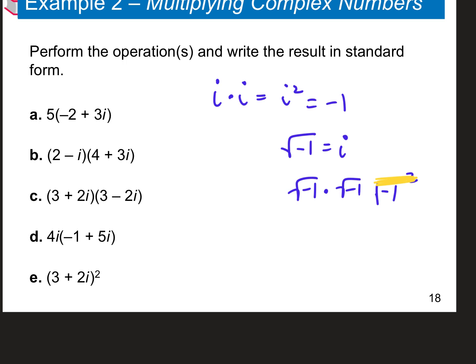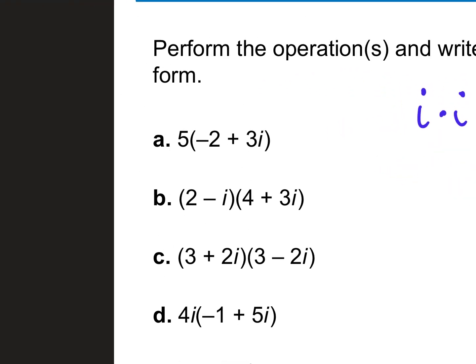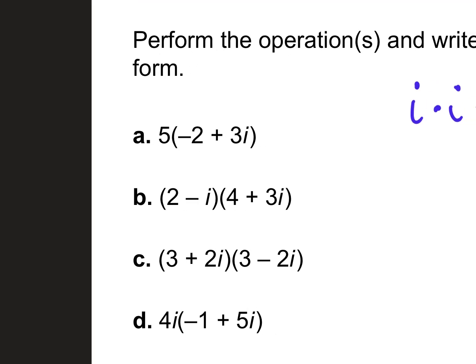Anytime you see i squared, cross it off and make it negative 1 — it should never appear in your final answer. For part (b), distribute the 5: 5 times negative 2 is negative 10, and 5 times 3i is plus 15i. Is that in standard form? Real part first, imaginary second — perfect: negative 10 plus 15i. Now for part (b) with FOIL: first times first, 2 times 4 is 8; outer, 2 times 3i is plus 6i; inner, negative i times 4 is minus 4i; last, negative i times positive 3i is negative 3i squared.